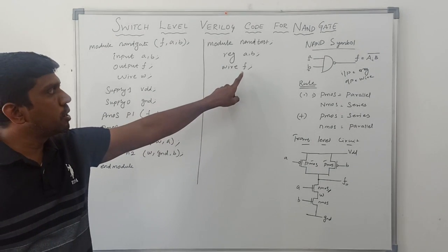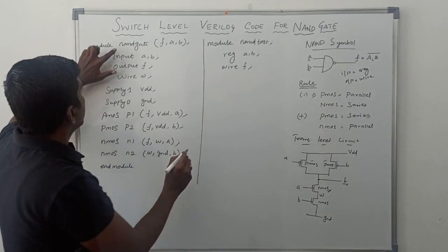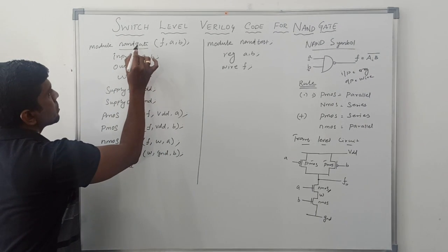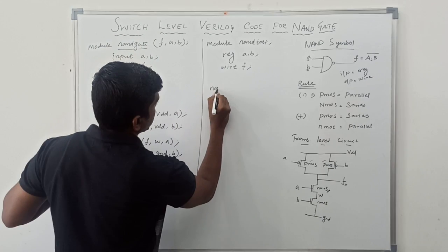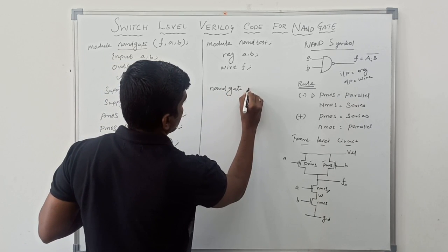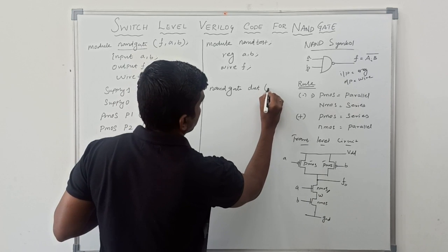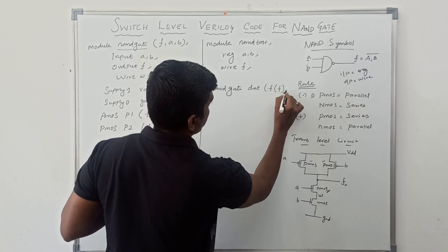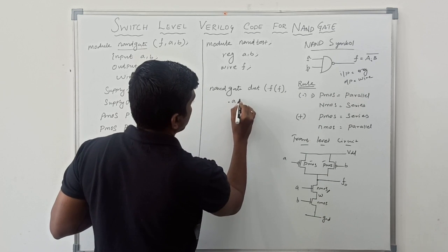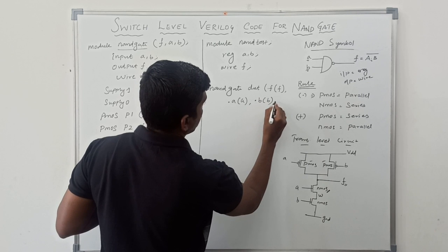Reg A comma B, wire F. F is the output variable, so this variable is declared as wire. Then, the module name is NAND gate. This name is reflected here, device under test. Now, bracket, dot F F, dot A A, dot B B.